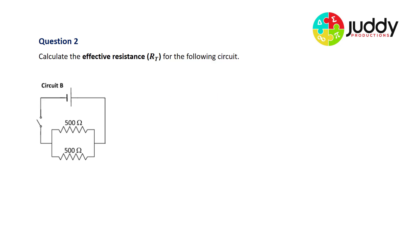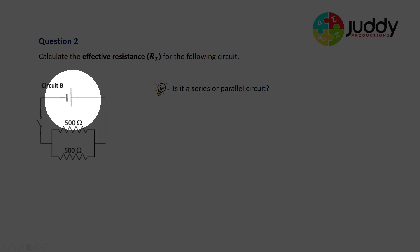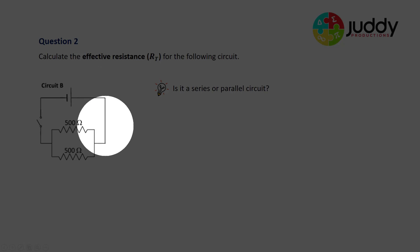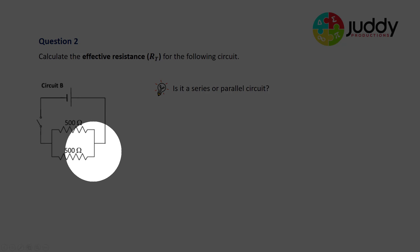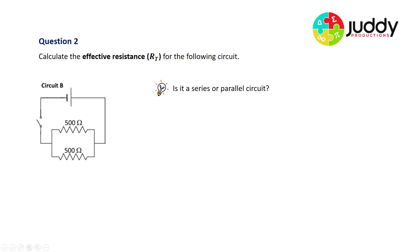Question number two: calculate the effective resistance, also known as the total resistance RT, for the following circuit. Is it a series or parallel circuit? This is parallel — as charge leaves the positive terminal of the battery, it reaches a node or fork in the road where charge can either go up or down. There are two distinct branches, so this is indeed a parallel circuit.